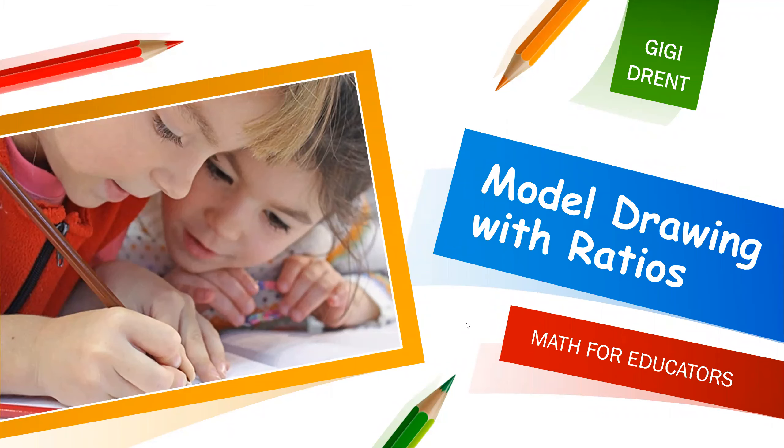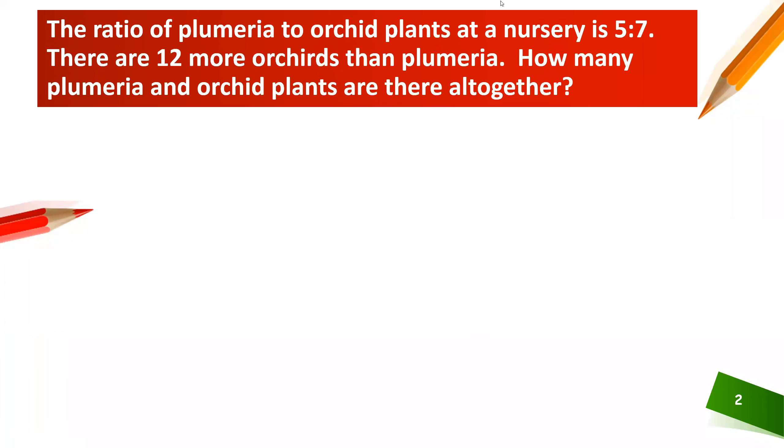Model drawing with ratios. Suppose you have something like this. The ratio of plumeria to orchid in a nursery is 5 to 7. There are 12 more orchids than plumeria. How many plumeria and orchid plants are there all together?